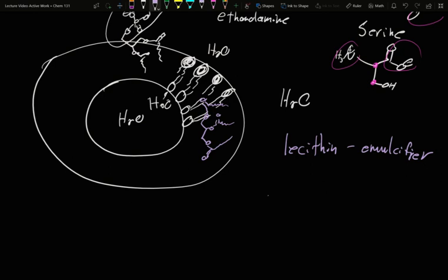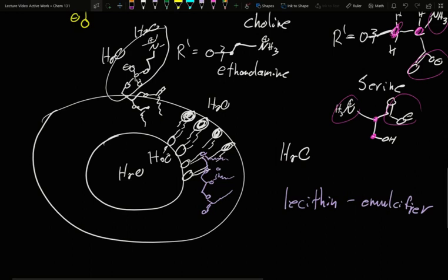Lecithin binds polar and non-polar things together. Because we have those phosphate groups with the very polar other ends and the non-polar tails, for things like peanut butter, you've got proteins which are reasonably polar. So our phosphocholine bit can interact with it. But you've also got a lot of oil which the tails can interact with.